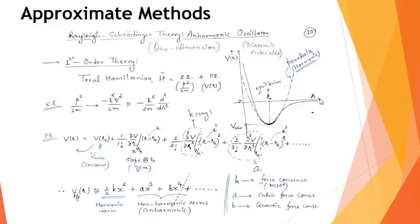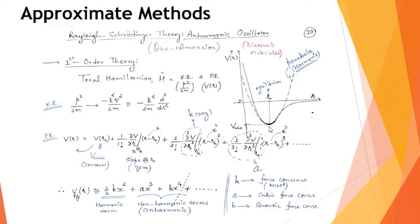The graph shows V(r) versus r, the separation between two atoms or molecules. At r = r₀, the equilibrium distance, the potential energy is at its minimum, the force is zero, and the system is in a stable condition. The region close to equilibrium looks like a parabola, as shown by the dashed line in the graph.